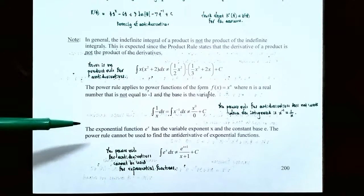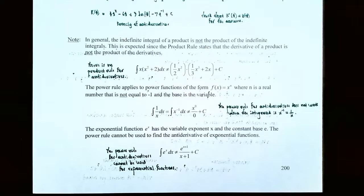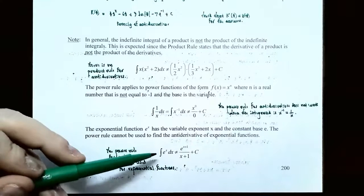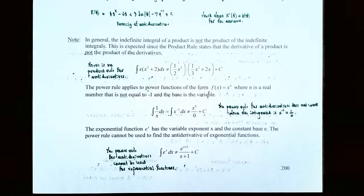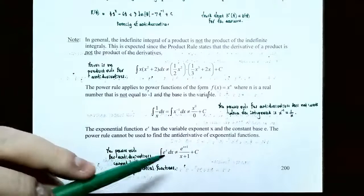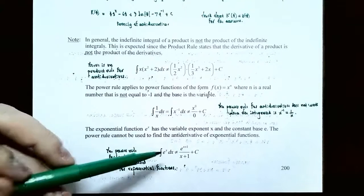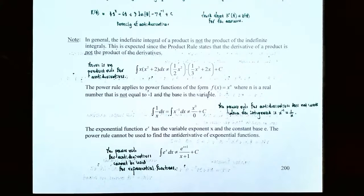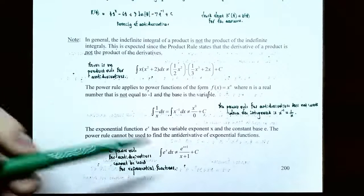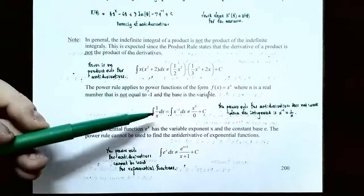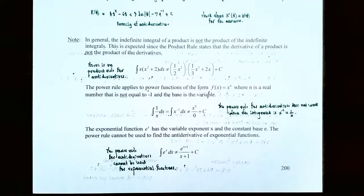Finally, the exponential function e^x has a variable exponent and a constant base — it is not a power function. You cannot use the power rule on it; you cannot add 1 to the exponent and divide. The antiderivative of e^x is just e^x, because the derivative of e^x is e^x. Use the power function rule only for power functions, the exponential rule for exponential functions, and remember 1/x is the special natural log case.